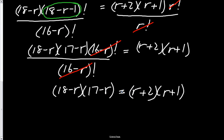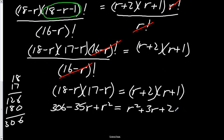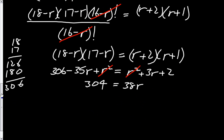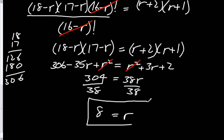Now we have an equation where one quadratic equals the other, and we're going to multiply things out. Expanding the left side gives 306 minus 35R plus R squared, and on the right side R squared plus 3R plus 2. The R squared terms subtract out, and when I isolate R I'm left with 38R equaling 304. Dividing by 38, I get R equals 8. And there's our answer.